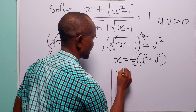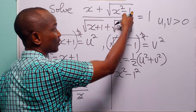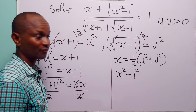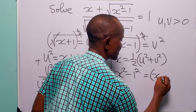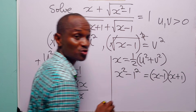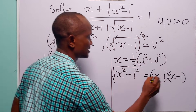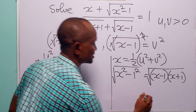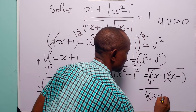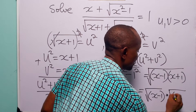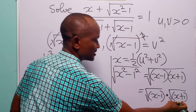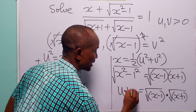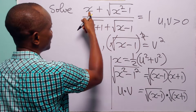Now let us look at the quantity x squared minus 1. We can write this as x squared minus 1 squared, and recognizing the difference of two squares, this equals (x minus 1)(x plus 1). So the square root of that is the square root of (x minus 1) multiplied by the square root of (x plus 1), which is simply u times v.